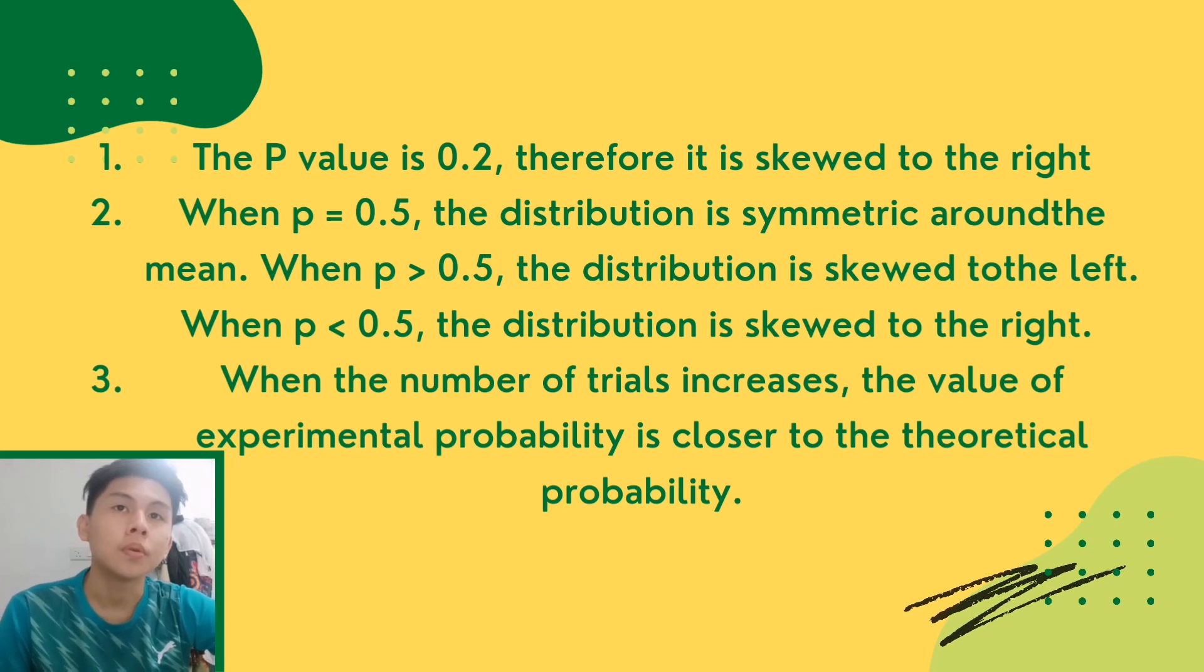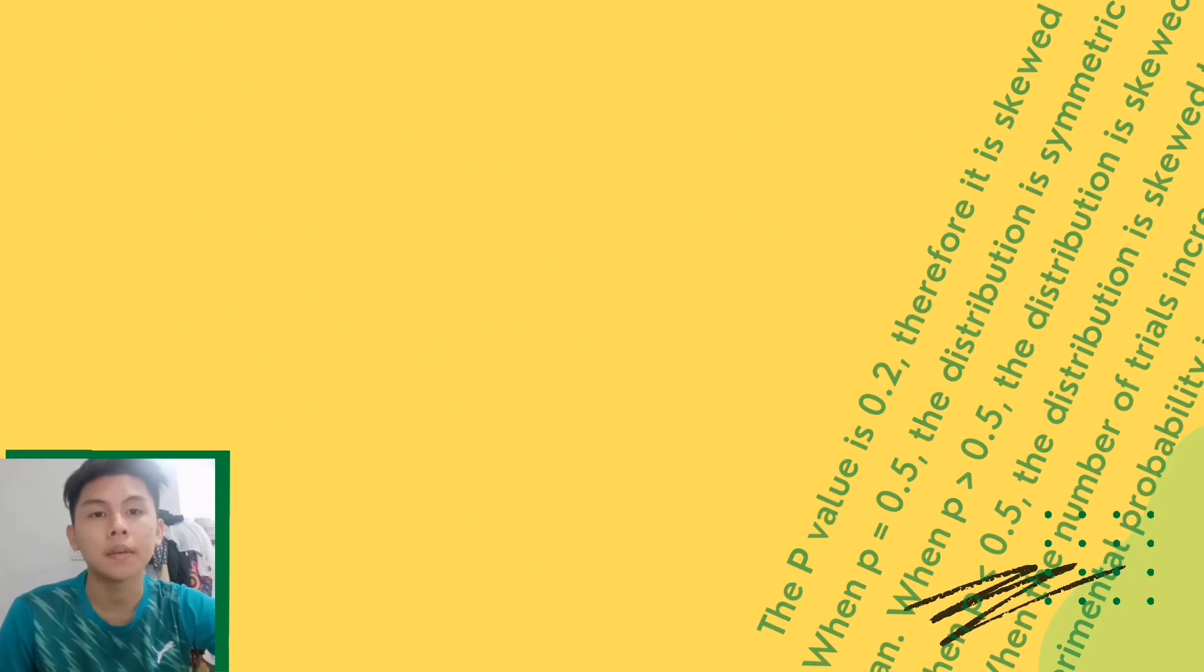First, the p-value is 0.2, therefore it is skewed to the right. Second, when p equals 0.5, the distribution is symmetric around the mean. When p is greater than 0.5, the distribution is skewed to the left. When p is less than 0.5, the distribution is skewed to the right. Third, when the number of trials increases, the value of experimental probability is closer to the theoretical probability.